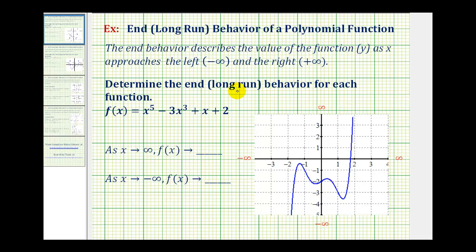We're asked to determine the end behavior or long run behavior for each function. The end behavior or long run behavior describes the value of the function, or the y value, as x approaches the left or approaches negative infinity, and approaches the right or positive infinity.